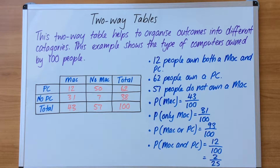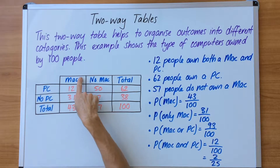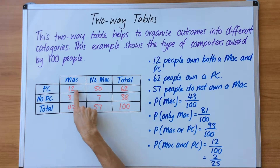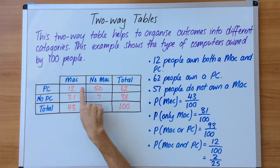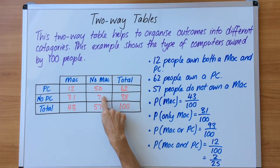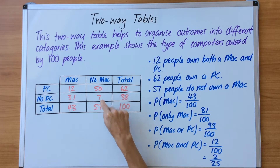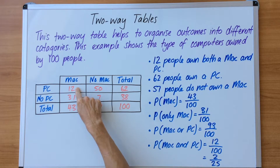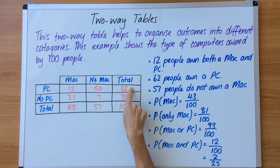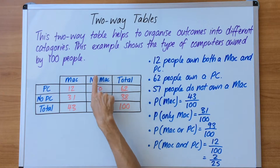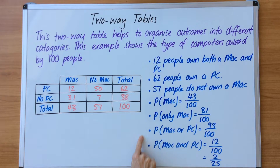Reading the table further: 12 people own both a PC and a MAC; 31 people have a MAC but no PC; 50 people don't have a MAC but do have a PC; and 7 people have no MAC and no PC — they have absolutely nothing. So 12 people have both, and 7 people have nothing. The information on the right confirms: 12 people own both a MAC and a PC, 62 people own a PC, and 57 people do not own a MAC.